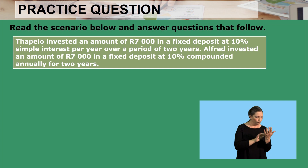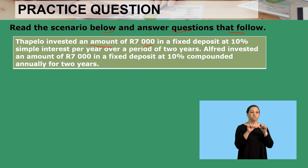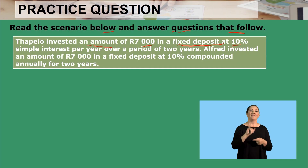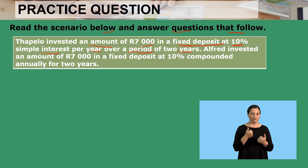Our first practice question is a scenario-based question which requires us to calculate. We have to read the scenario below and answer the questions that follow. We have TAPELO, who invested an amount of 7,000 in a fixed deposit at 10% simple interest per year over a period of two years.